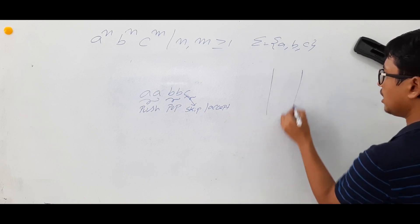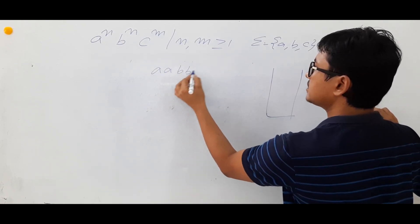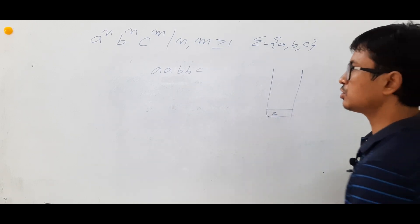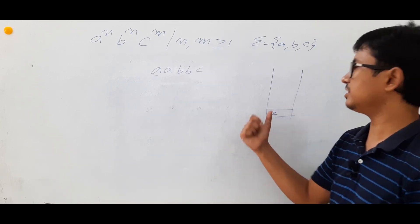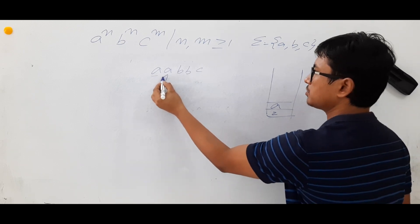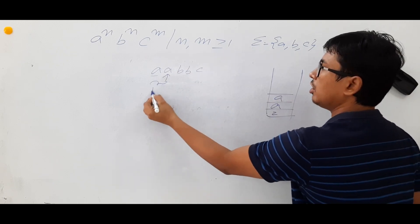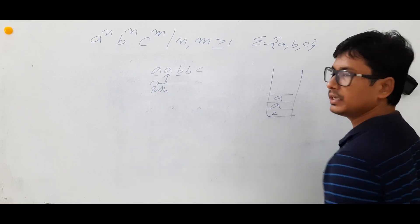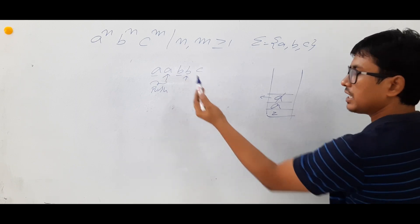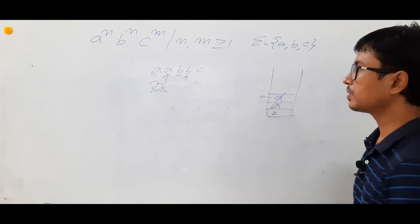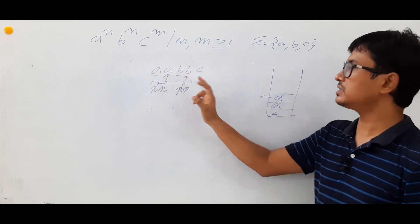Let me demonstrate with the string 'a a b b c'. The bottom of the stack is Z. Whenever I see an 'a' and the stack has Z, I push the a. If I see an 'a' and the stack top is also 'a', I push again. So I push all the a's. Once I see a 'b' and the stack top is 'a', I pop the a. I keep popping for each b.